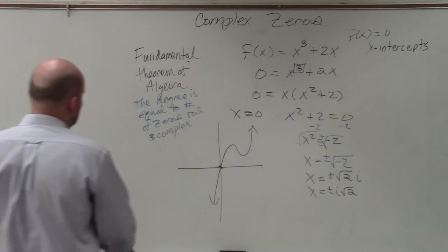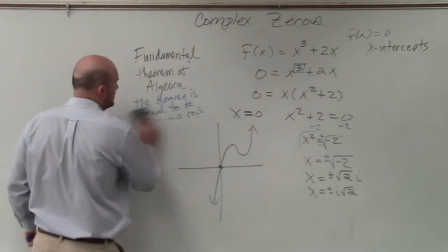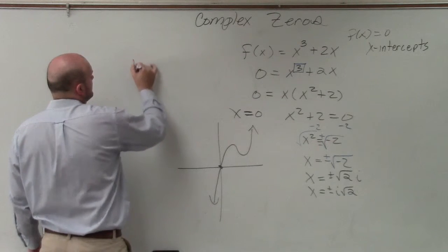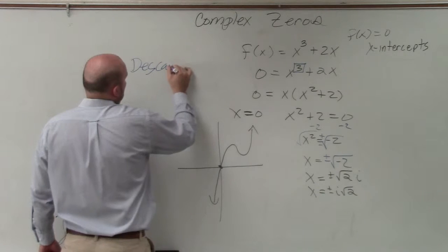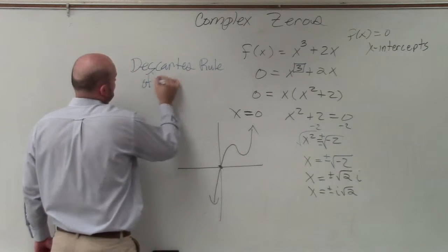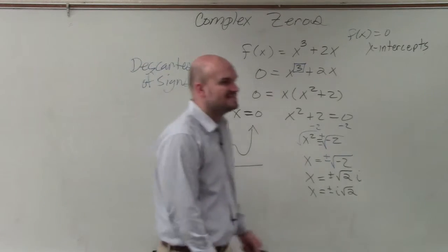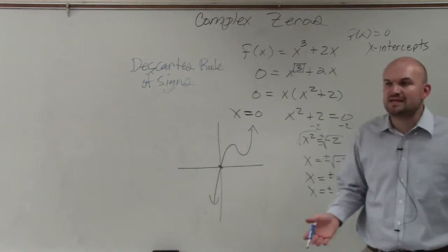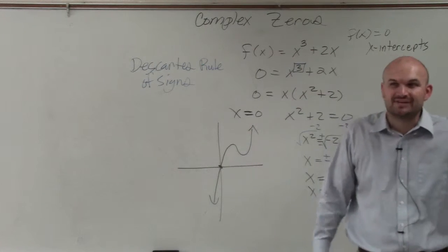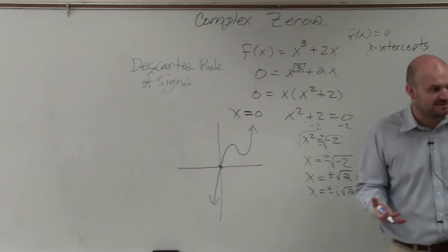So the next thing that we're going to do is called Descartes' rule of signs. And what Descartes' rule of signs basically tells you is how many real positive and how many real negative zeros a polynomial has.